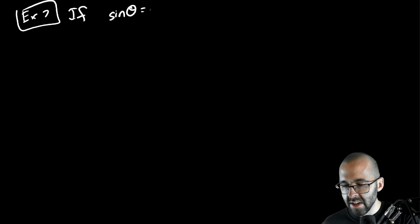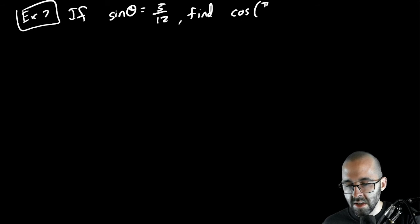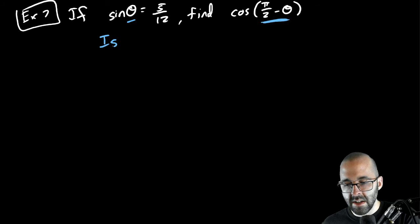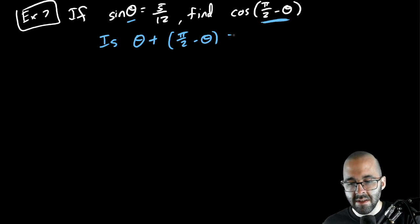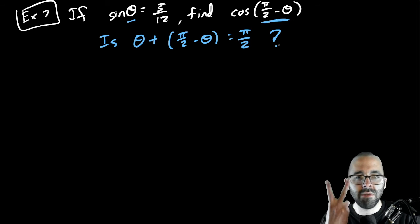Example 7: If sine of theta is five twelfths, find the cosine of pi over 2 minus theta. So to use these identities you only have to do two things. First, look at the angles. Is theta and pi over 2 minus theta, are they complementary?